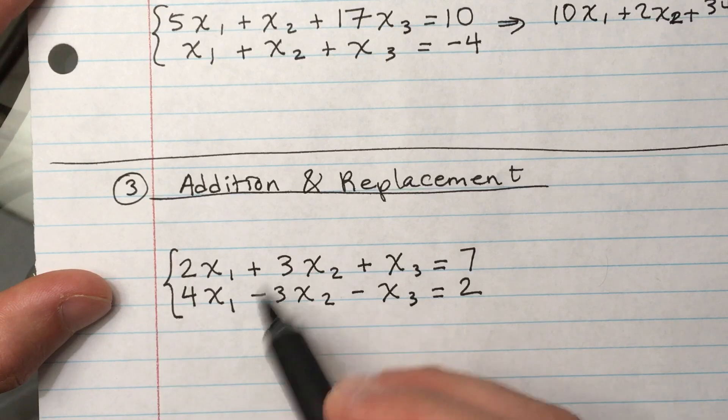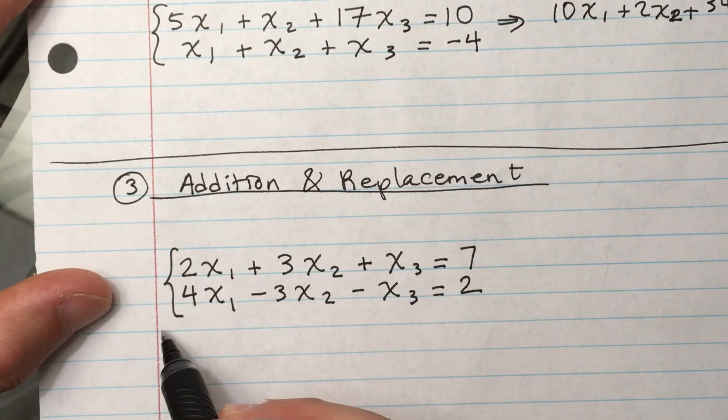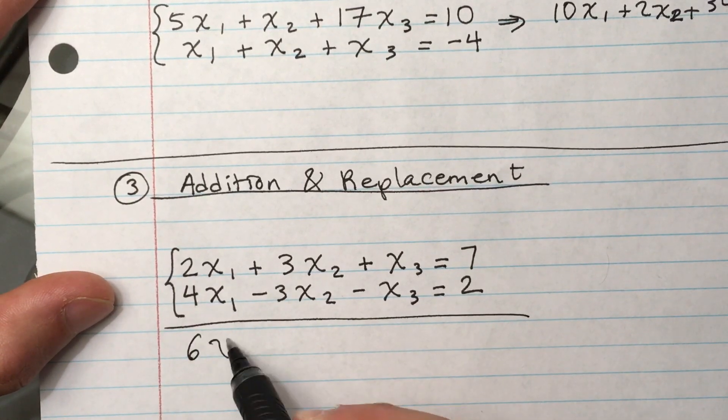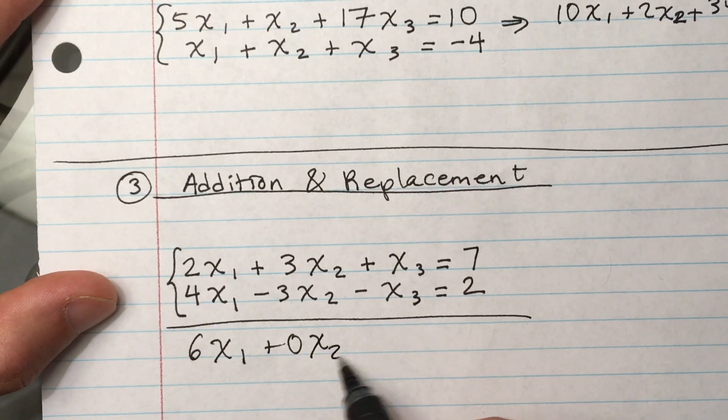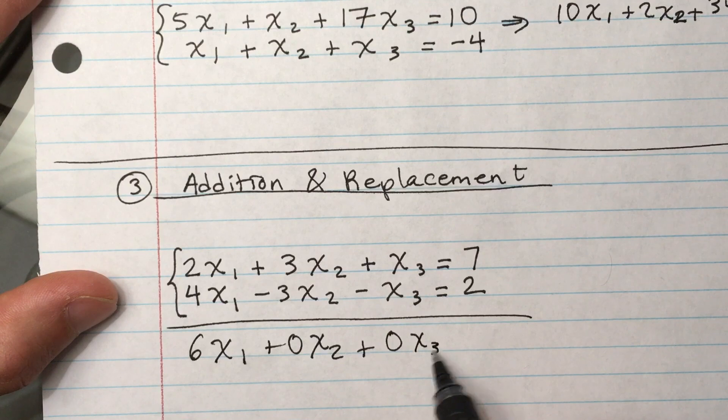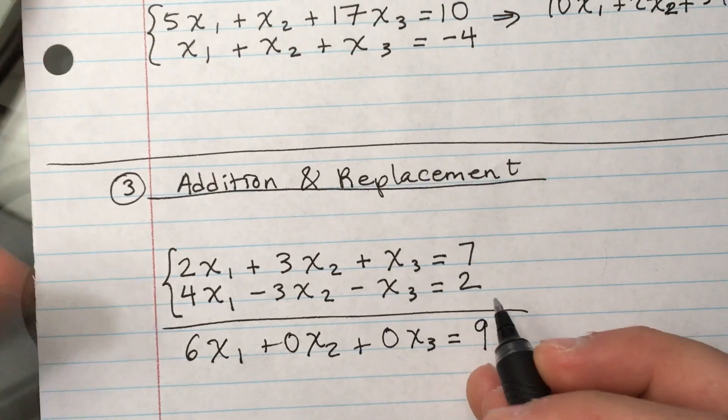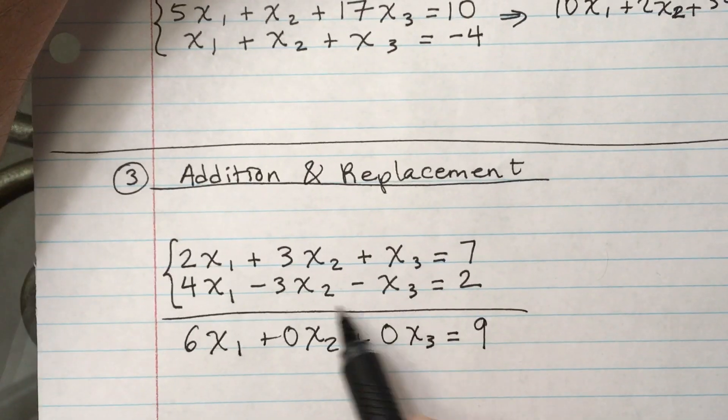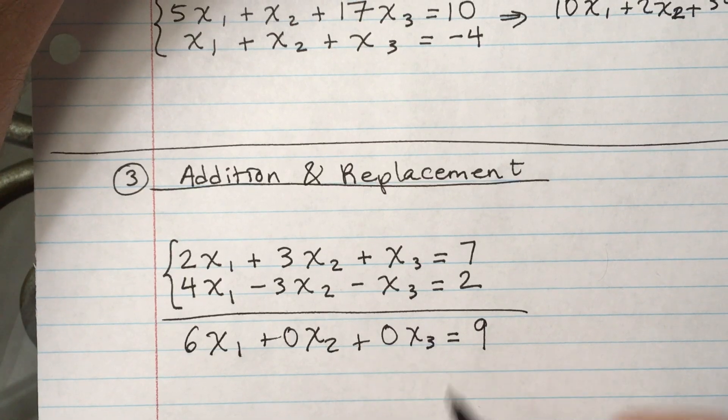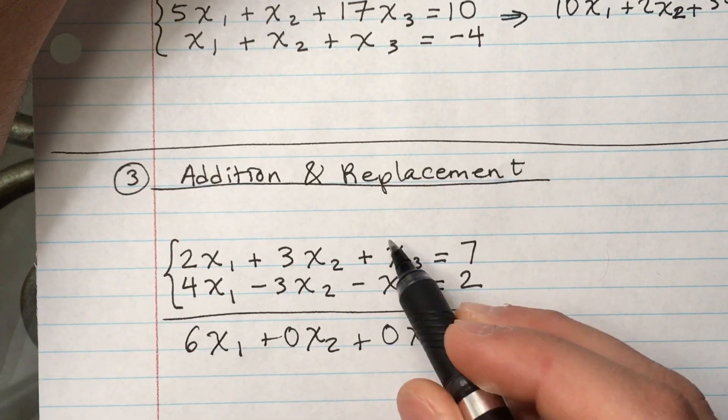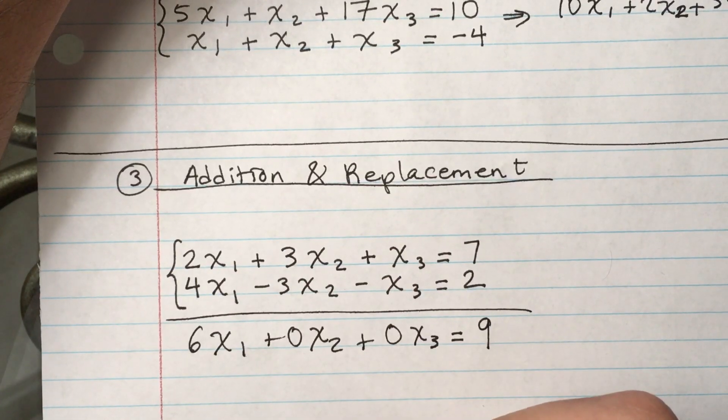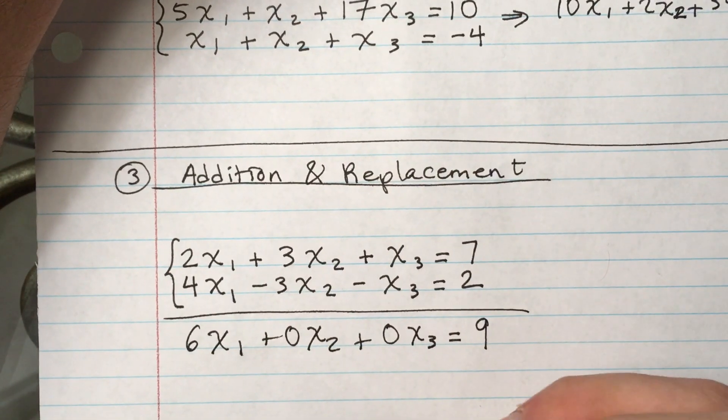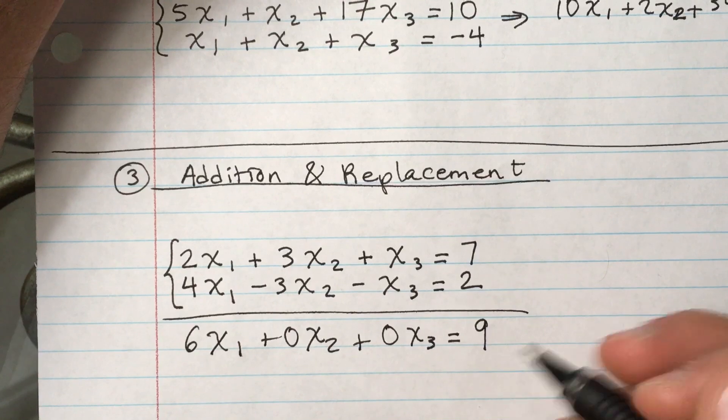Let's say we have this system of two equations. I want to add these two. Okay, so I'm gonna add these two, and then what I get is 6x₁ plus 0x₂ plus 0x₃ equals 9. All right, and then this equation that I get I could replace it with one of those two participating equations in this addition operation.